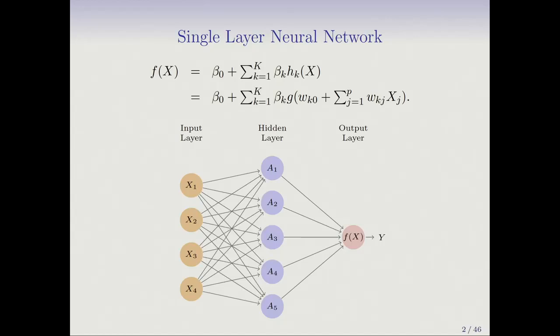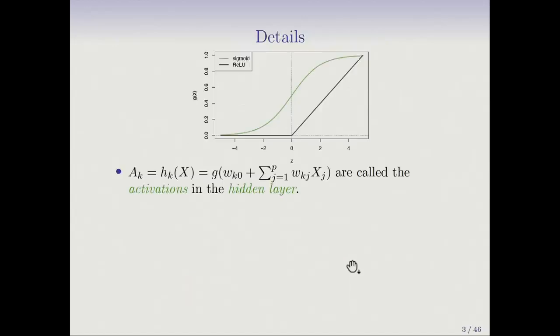These activations are computed. In this equation, they're named HK of X. The K-th activation is a transformation of the inputs X. These little arrows indicate linear combinations of the X's that feed into each of these hidden units. HK of X is expanded as a nonlinear function of a linear combination of the inputs. Each of those linear combinations is different. So the linear combination feeding into A1 is different to the one feeding into A2. These are transformations that are learned when you train the network, learned on the fly.